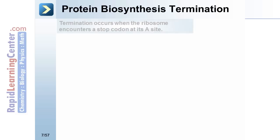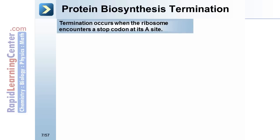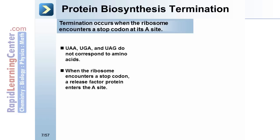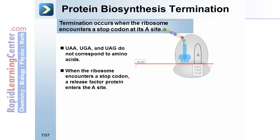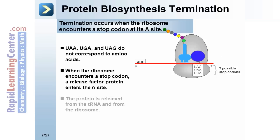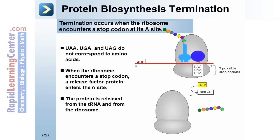Protein biosynthesis termination. Termination occurs when the ribosome encounters a stop codon in its A site. UAA, UGA, and UAG do not correspond to amino acids. When the ribosome encounters a stop codon, a release factor protein enters the A site. The protein is released from the tRNA and from the ribosome. GTP is hydrolyzed to GDP, meaning this process costs some energy. The ribosome subunits then dissociate.